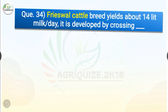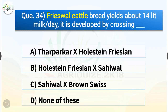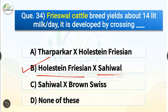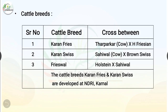Question number 34. Frieswal cattle breed yields about 14 litres of milk per day and it is developed by crossing dash. The options are Tharparkar and Holstein-Friesian, Holstein-Friesian and Sahiwal, Sahiwal and Braunvieh, or none of these. The correct answer is option B, Holstein-Friesian and Sahiwal. So Frieswal is developed by crossing Holstein-Friesian and Sahiwal. Also: Karan-Swiss is a cross between Sahiwal and Braunvieh; Karan-Fries is a cross between Tharparkar and Holstein-Friesian; both Karan-Fries and Karan-Swiss are developed at NDRI Karnal.